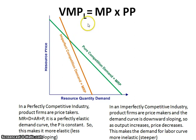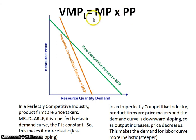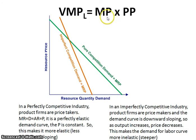This formula is necessary — it will be on FRQs. Most questions are about the perfectly competitive market, but the follow-up is always: why is it downward sloping? Because of marginal product, which is diminishing returns.